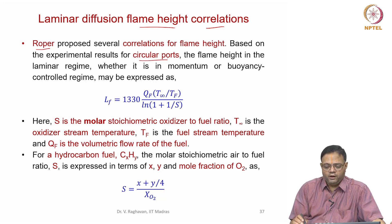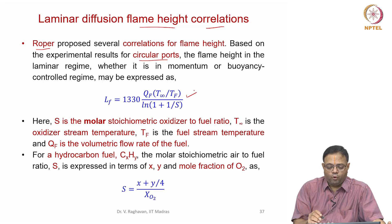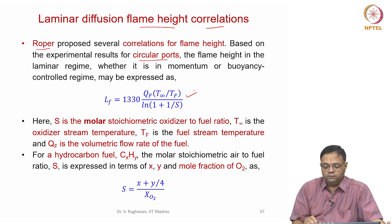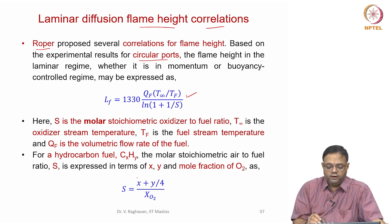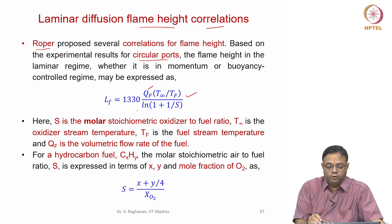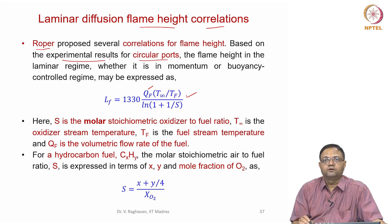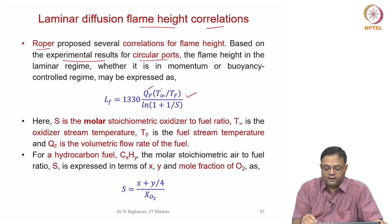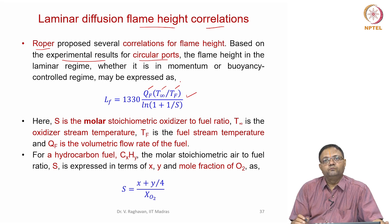Here Roper's correlation for the circular port burner is given. As seen in the scaling analysis, the flame height is dependent on the volumetric flow rate of the fuel Qf. This correlation is based on several experimental results using different types of fuels, and the ambient temperature T∞ and the fuel temperature Tf have been varied. That ratio has also been taken into account.